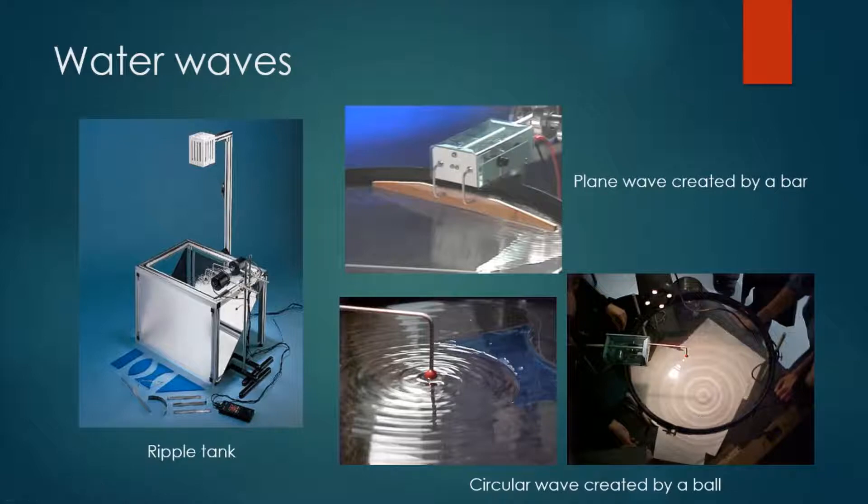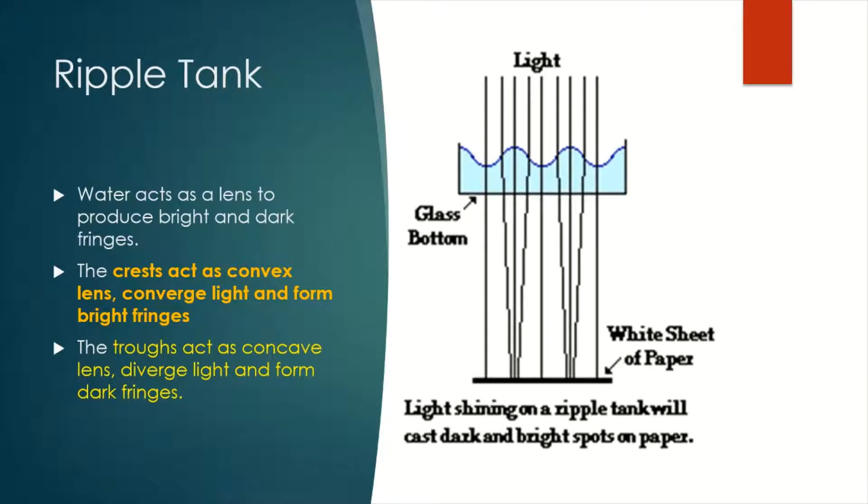How are these bright and dark fringes formed? Let's look at this diagram. This diagram shows the cross section of the water wave. Water wave has crest and trough. When light passes through the crest, light converges and forms a bright fringe on the paper.